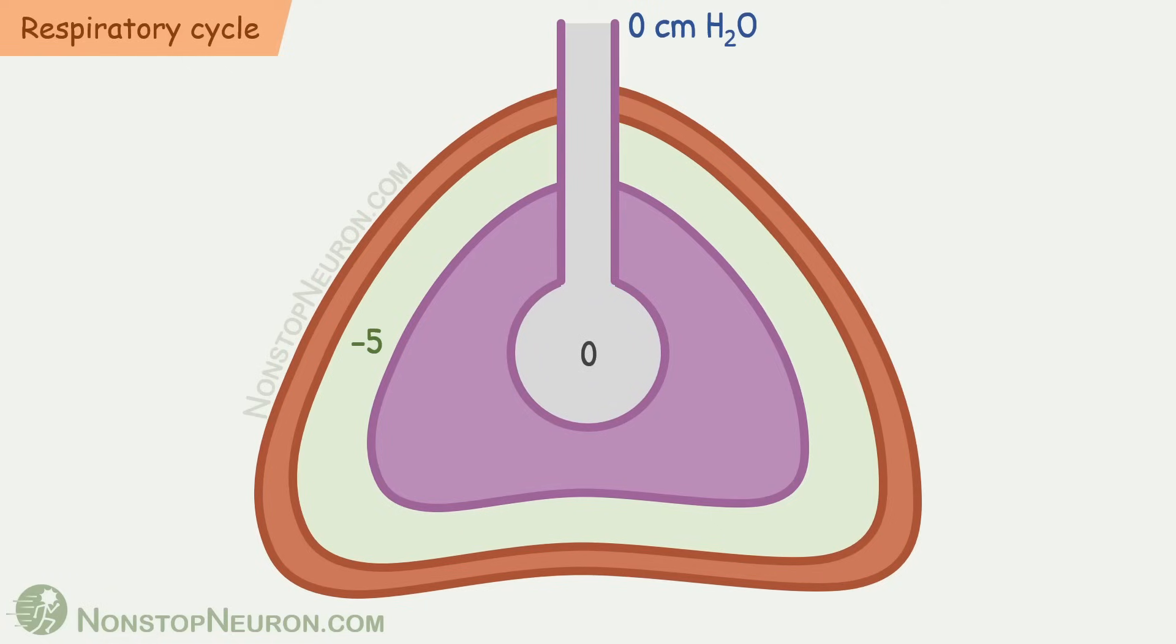So, this was the entire cycle. Please note that in reality, movement of chest wall and lungs occur simultaneously as they are pretty much stuck together. Here, I showed them one by one only to explain causal sequence.